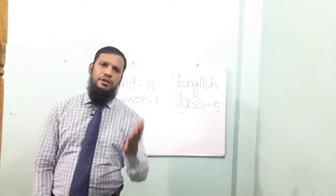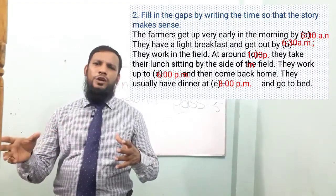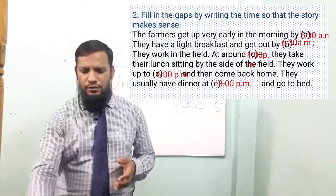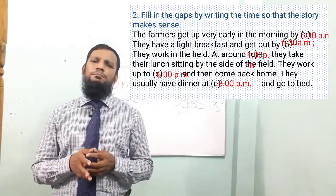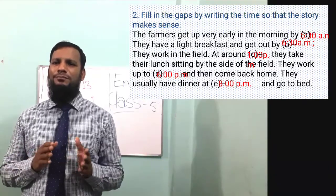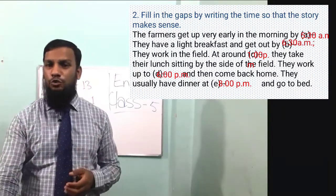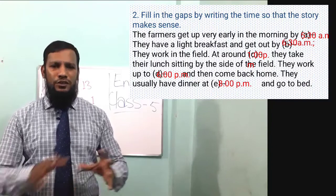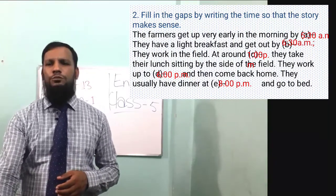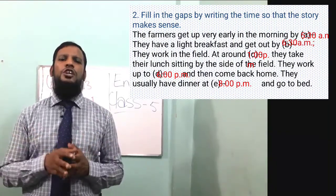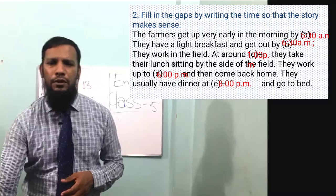The farmer gets up very early in the morning by 5:30 AM. They have a light breakfast and get out by 6:30 AM. They work in the field. At around 1 PM they take their lunch sitting by the side of the field. They work up to 6 PM and then come back home. They usually have dinner at 8 PM and go to bed.